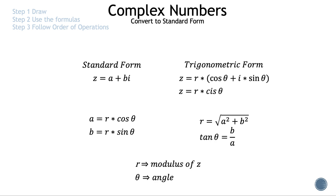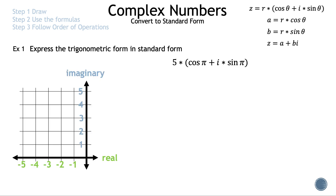Let's put those formulas into action by starting example 1. The steps are: step 1, draw; step 2, use the formulas; step 3, follow order of operations. The question: express the trigonometric form 5(cos π + i·sin π) in standard form.